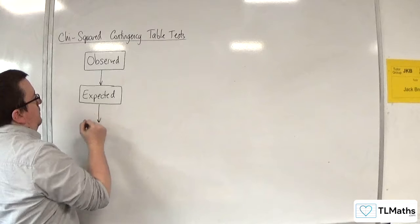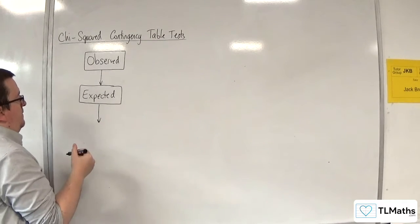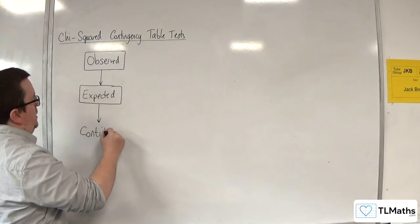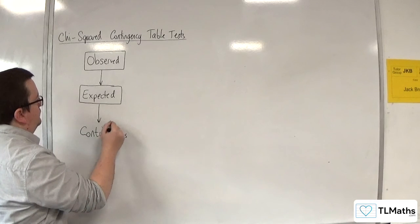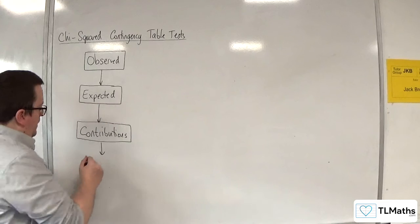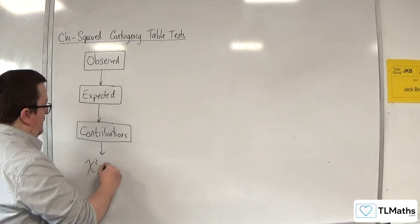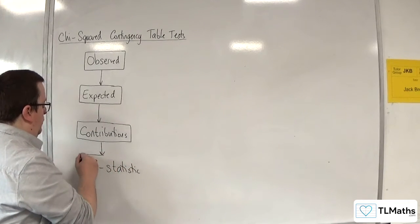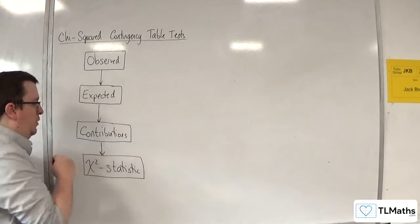Then, using those two, the observed and expected, you will build another table, the contributions table. From which, you can then calculate the chi-squared statistic, which will be the sum of all of the values in your contributions table.